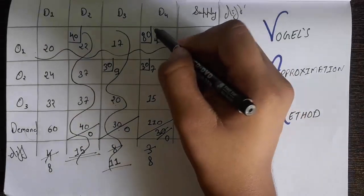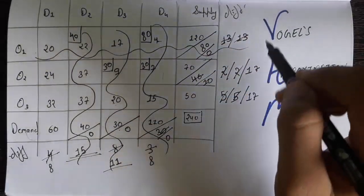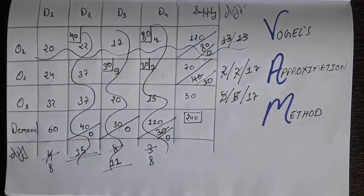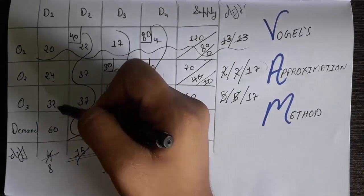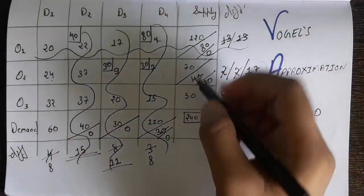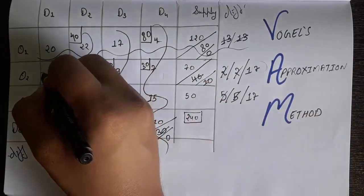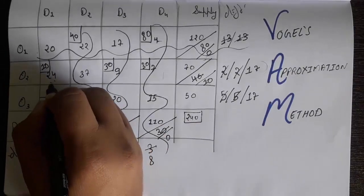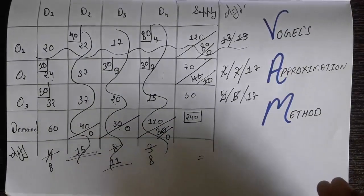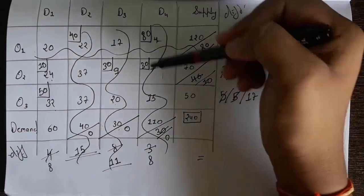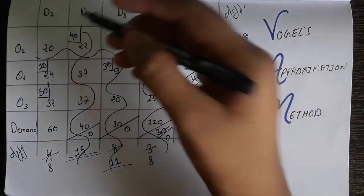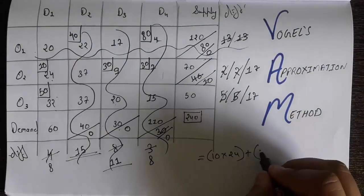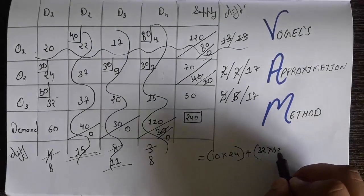Now only two numbers remain: 24 and 32, with remaining supply values of 10 and 50 respectively. Since only one number is left in each, we directly allocate the remaining supply. We write 10 in the cell for O2-D1 (value 24) and 50 in the cell for O3-D1 (value 32). Now calculate the total cost: multiply each allocated value by its cell cost — 10 × 24, plus 32 × 50, plus all previous allocations — and sum them all up.